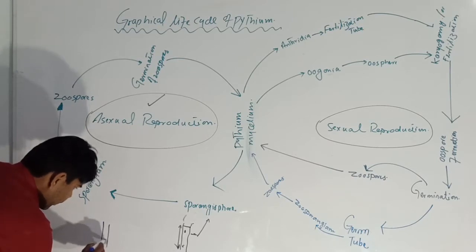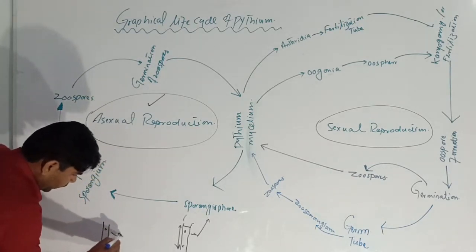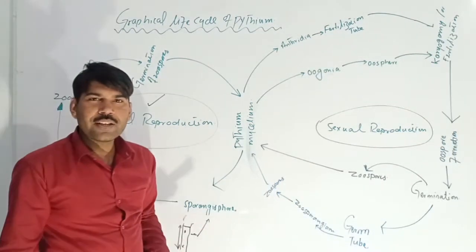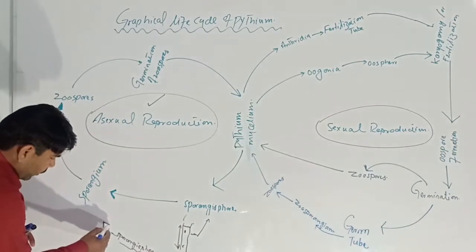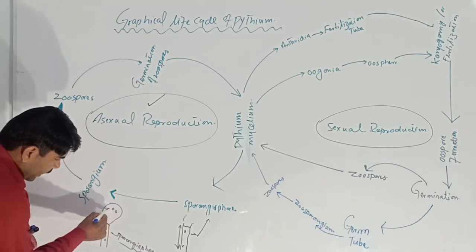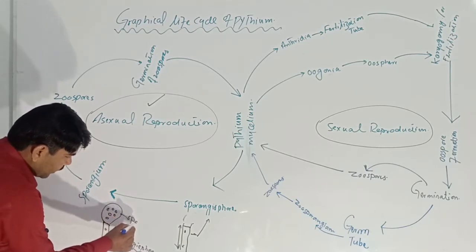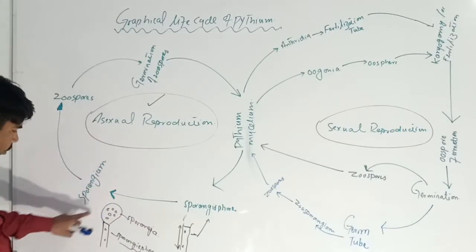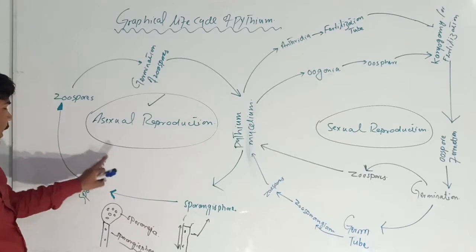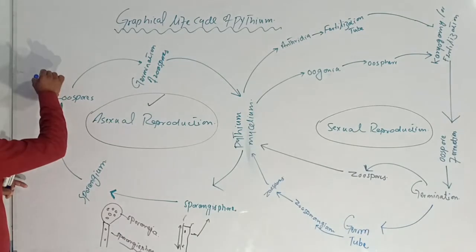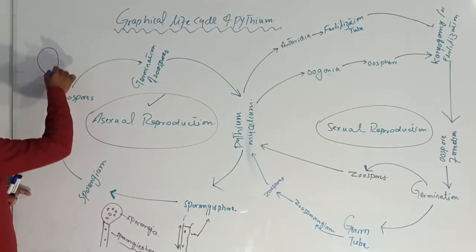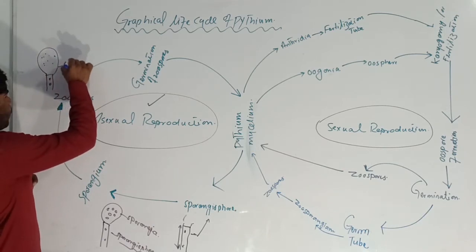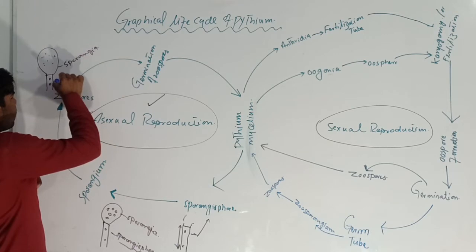So how is sporangia produced? This is a sporangiophore — sporangiophore means a sporangia-containing or sporangia-bearing structure. At the sporangiophore, this structure is known as sporangia. Inside the sporangia, these structures are produced — these are sporangiophores inside the sporangia.